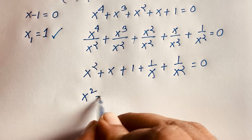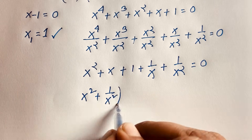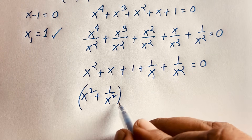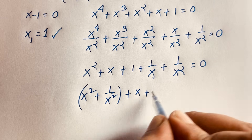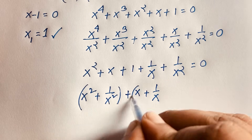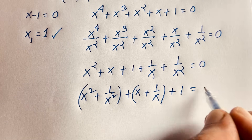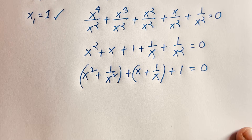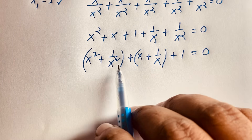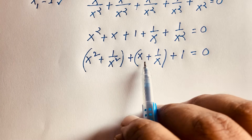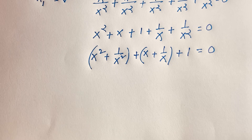Rearranging, we group the terms: x squared plus 1 over x squared, plus x plus 1 over x, plus 1 equals 0.